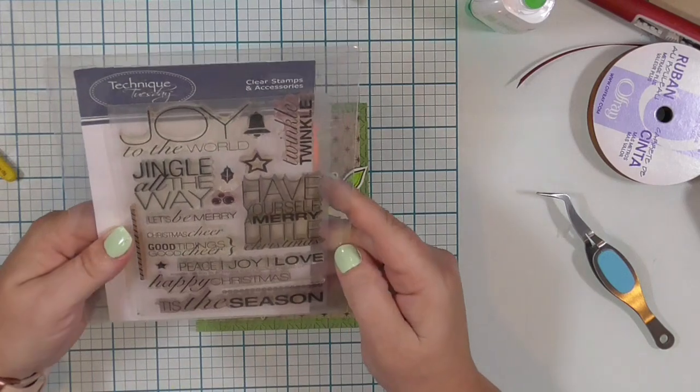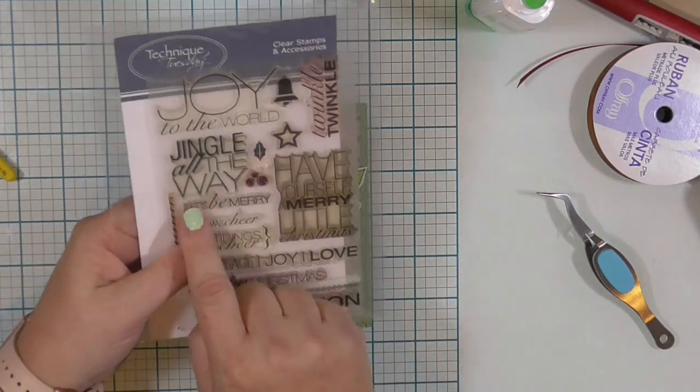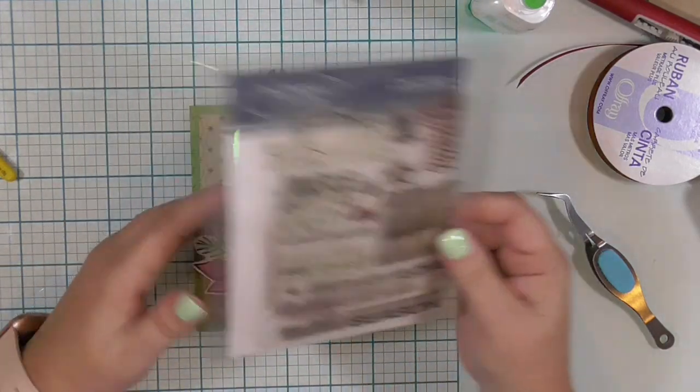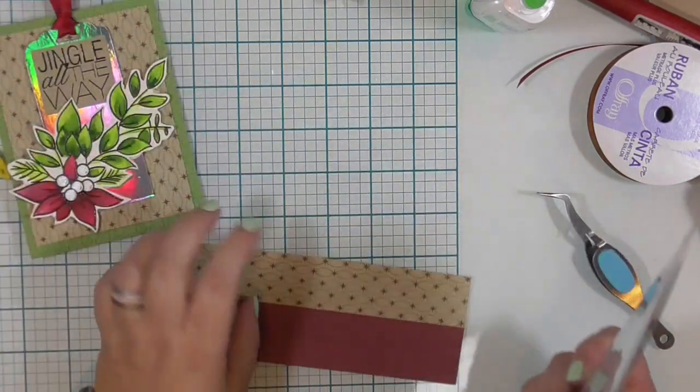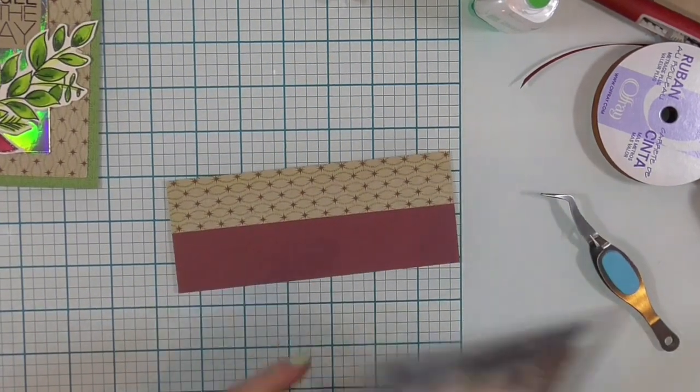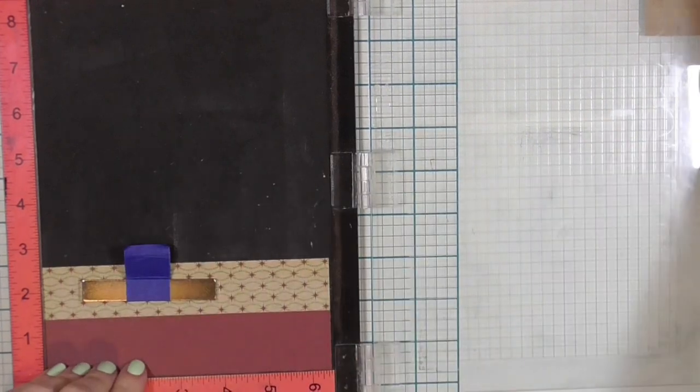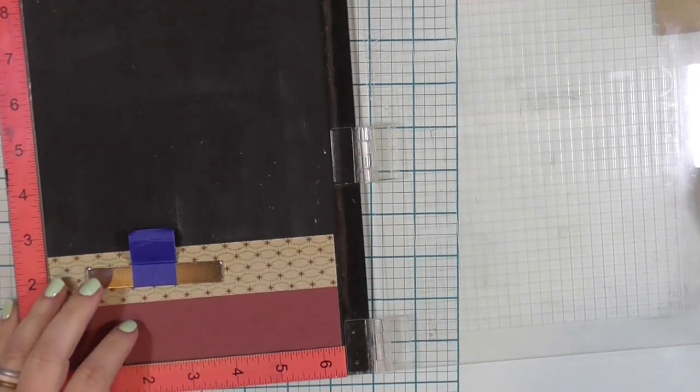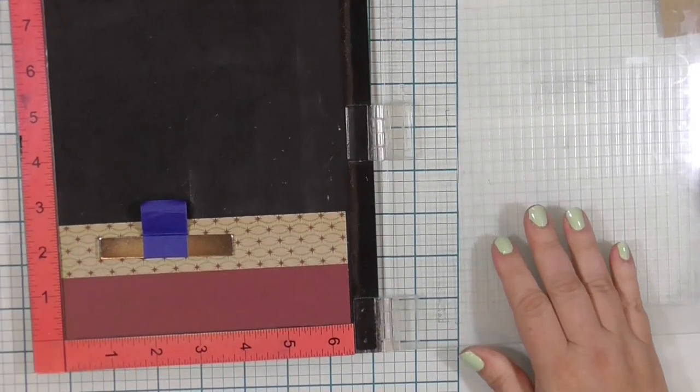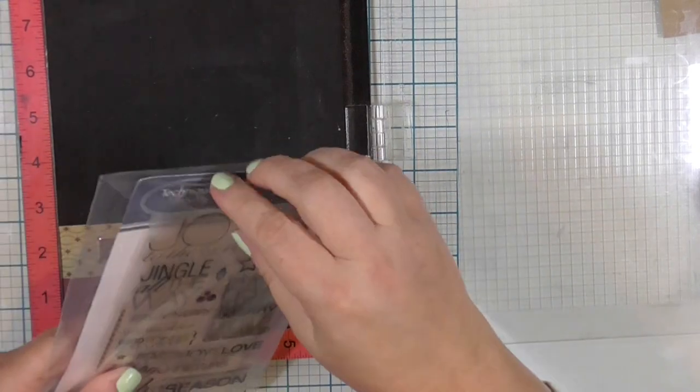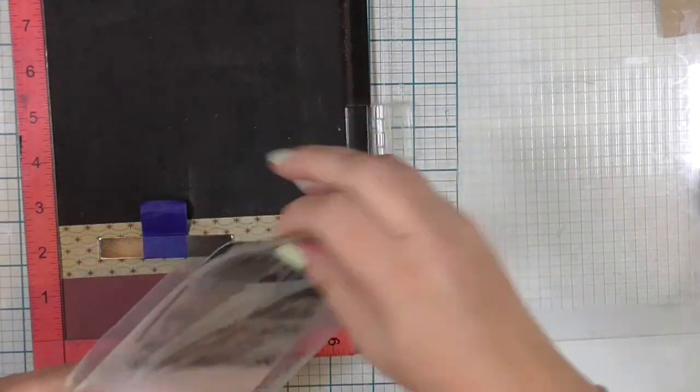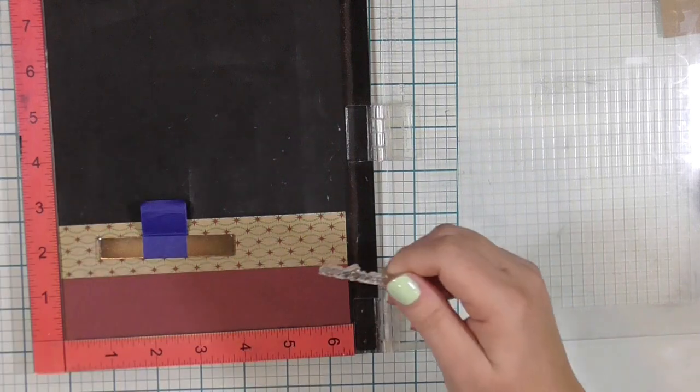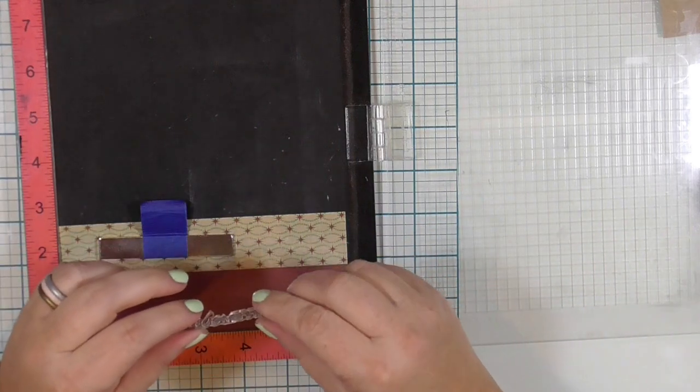And now we are going to add the other sentiment. You remember the card sketch had a little sentiment across the bottom? Well, I am going to take that piece of red paper from our background panel. And I am going to stamp this sub-sentiment from the Technique Tuesday stamp set. And this time I'm going to stamp it in clear VersaFine ink and white heat emboss it. So I'm going to use white embossing powder.